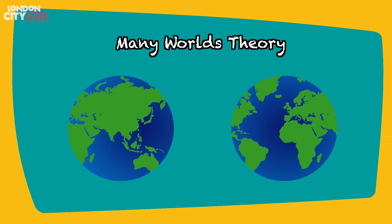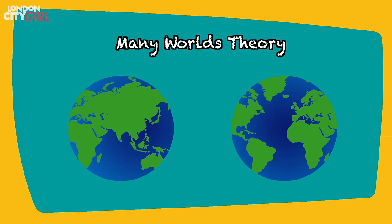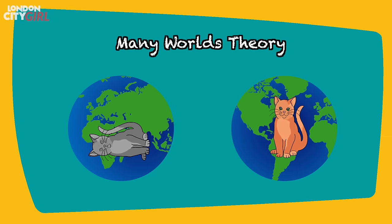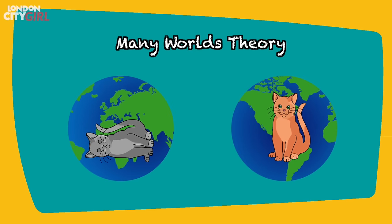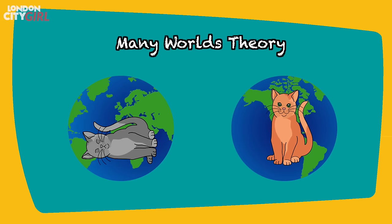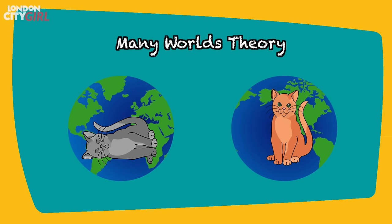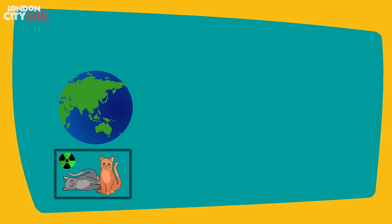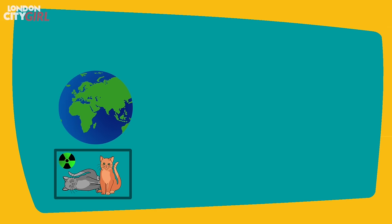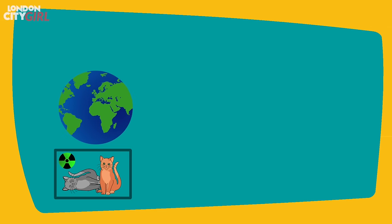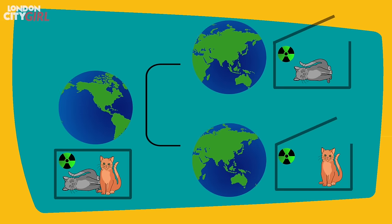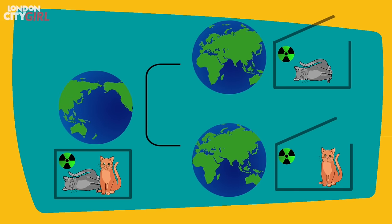There is a theory called the many worlds theory that states that anything that can happen does happen. So when Schrödinger's cat was observed, in one universe the cat was found to be dead, and in another universe the cat was found to be alive. When the cat was in the covered box it was in a superposition of being both dead and alive. When the box was uncovered, a split in the universe occurred where in one universe the cat was dead and in another the cat was alive.